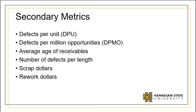Secondary or consequential metrics are derived from the primary metrics. Some examples of these metrics include defects per unit, defects per million opportunities, average age, number of defects per length, scrap, and rework dollars.